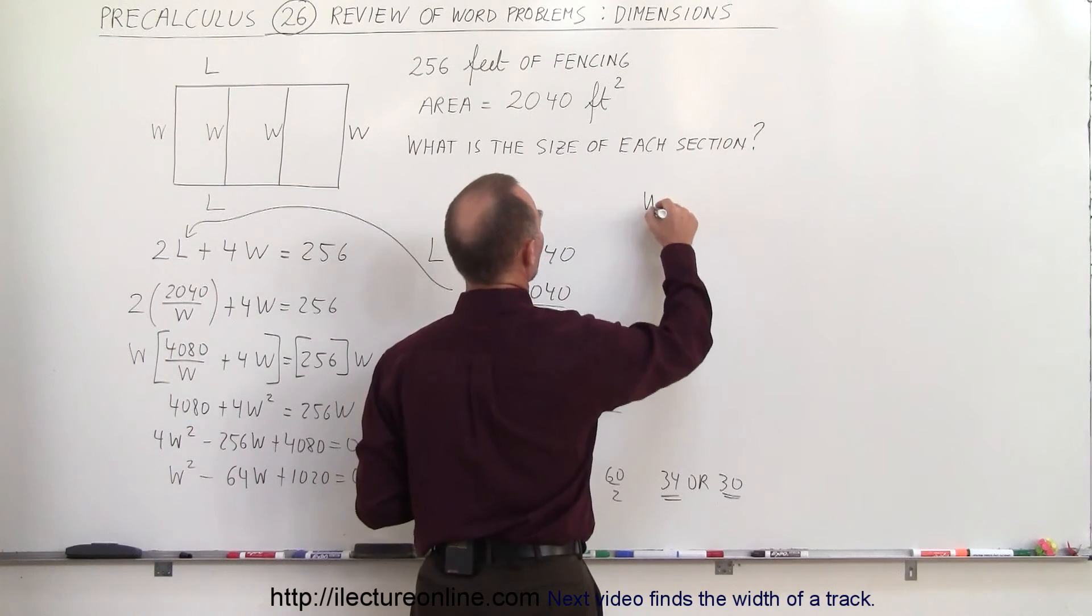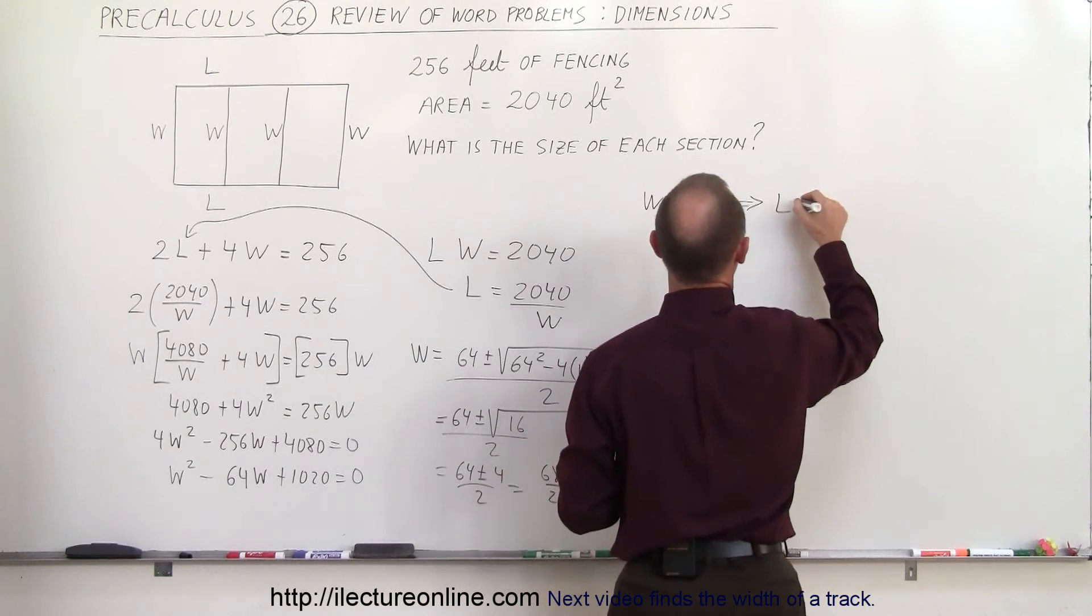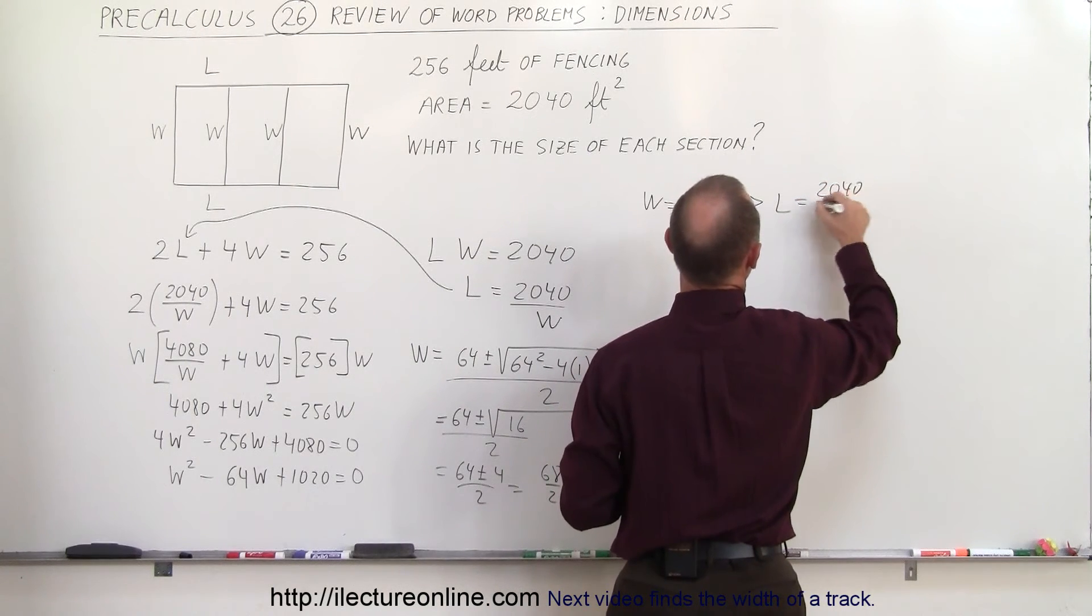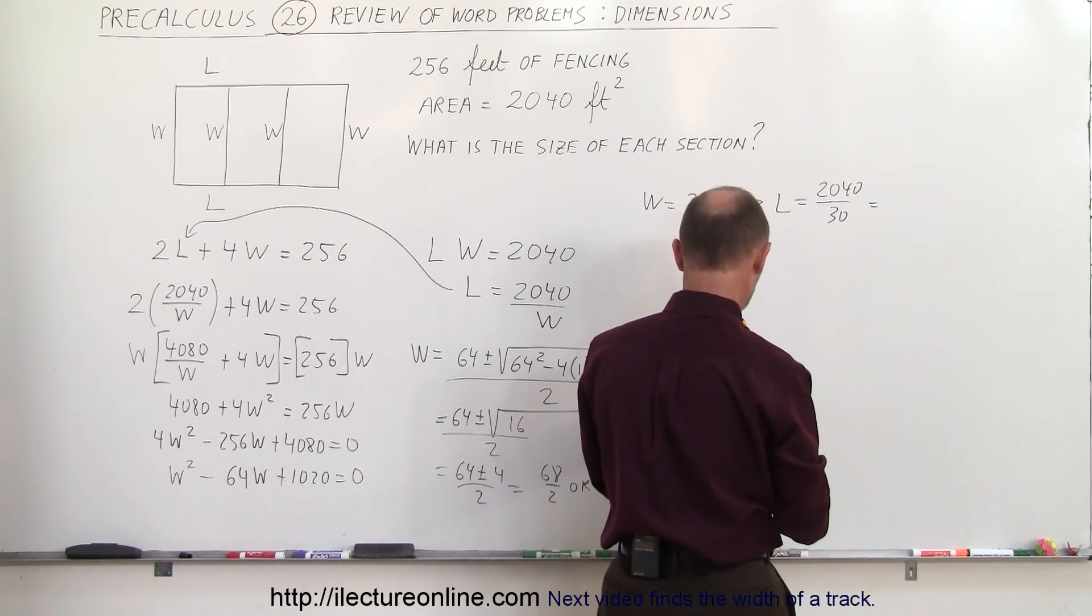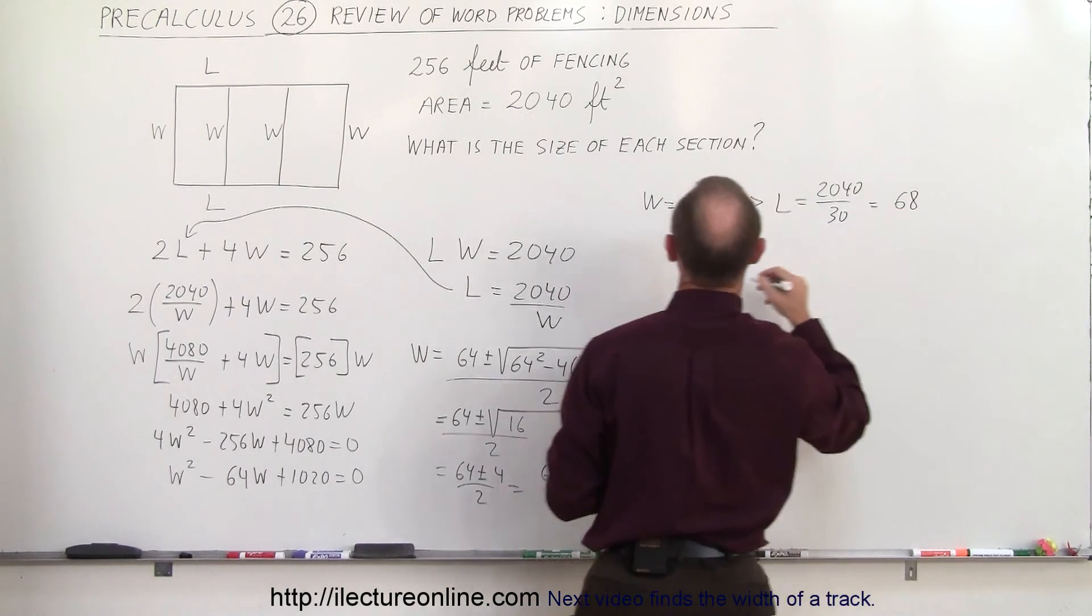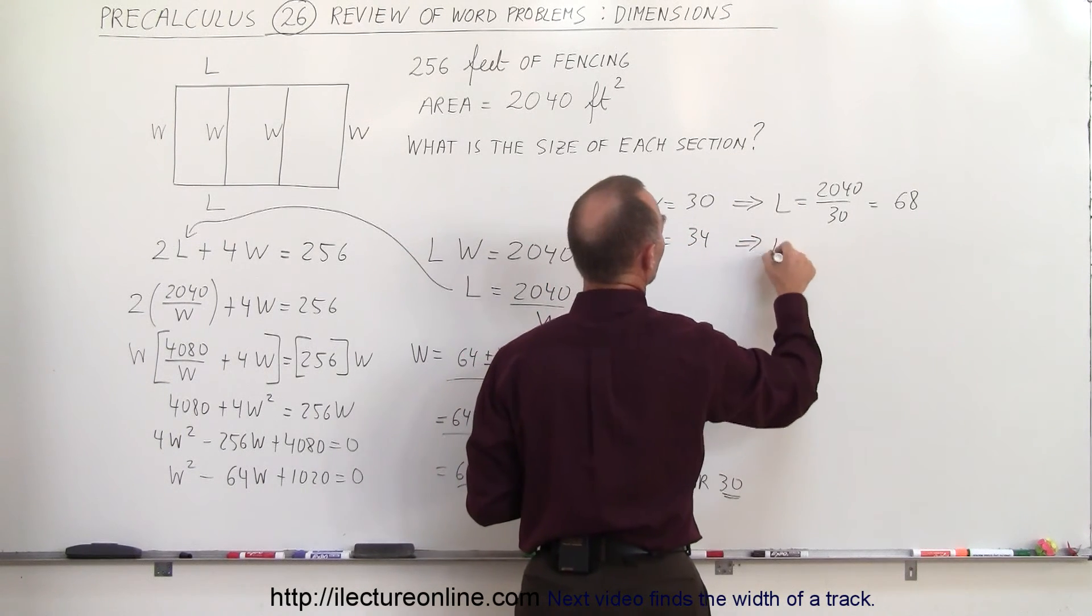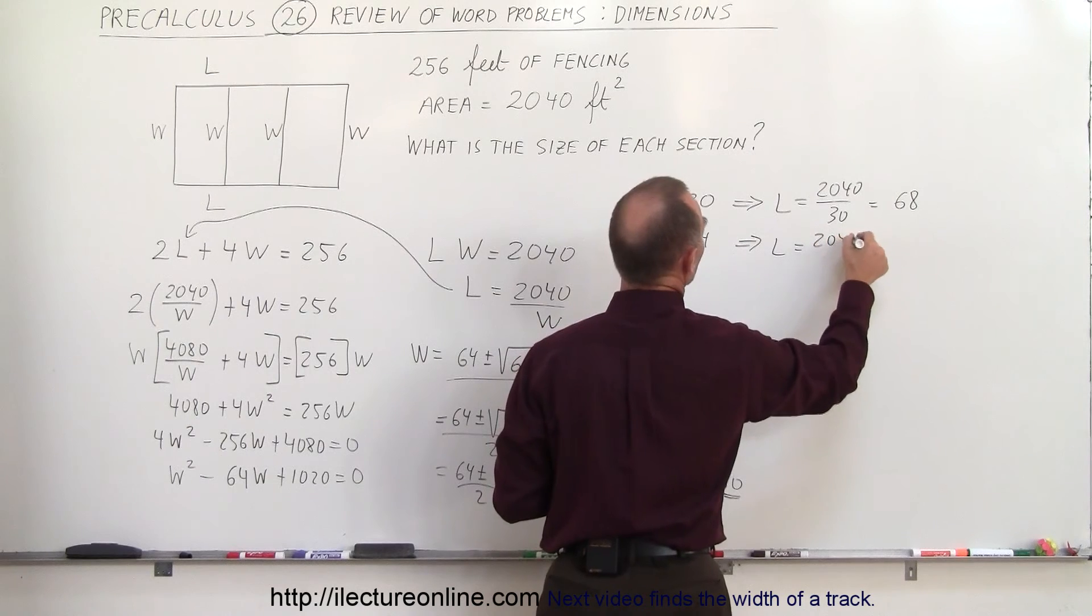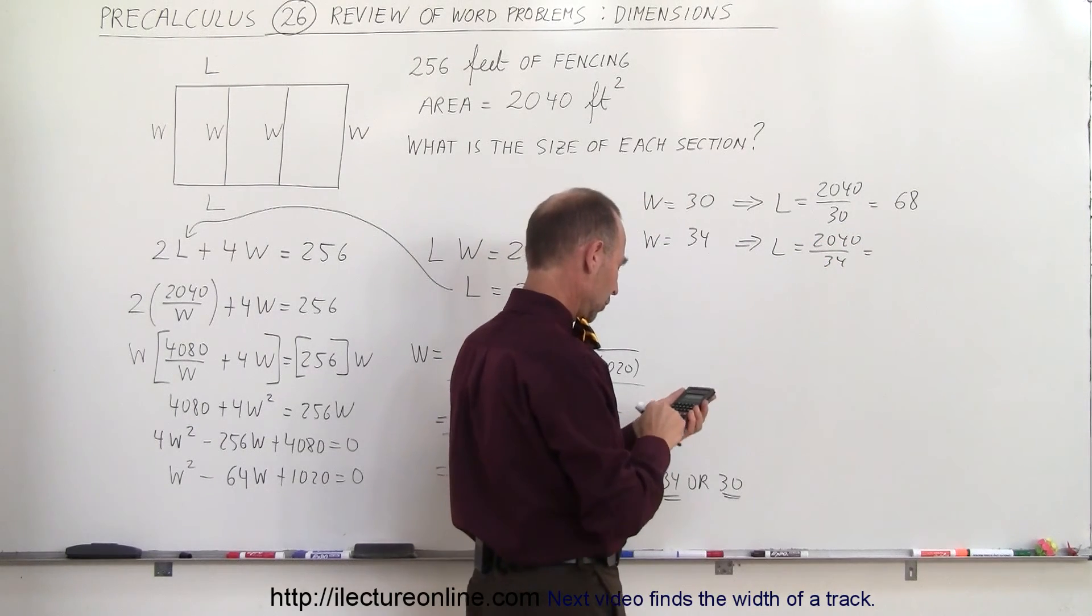from that we could say that the length is equal to 2040 divided by 30 and that would be 68 or if the width is equal to 34 that means that the length is equal to 2040 divided by 34 that's 60.